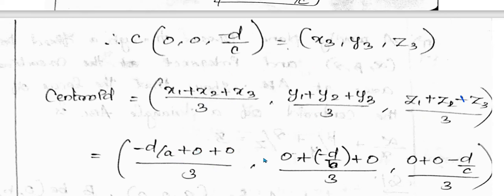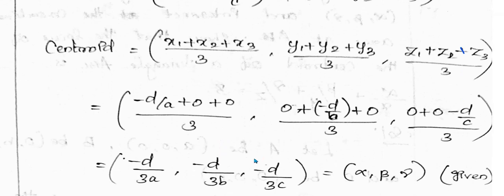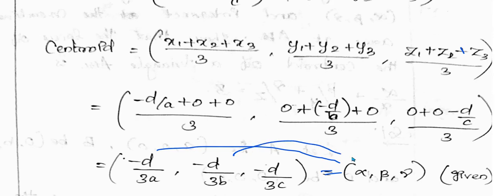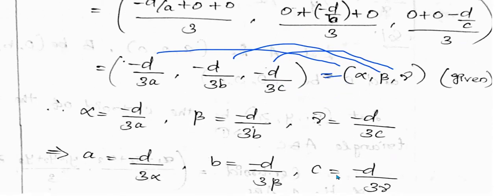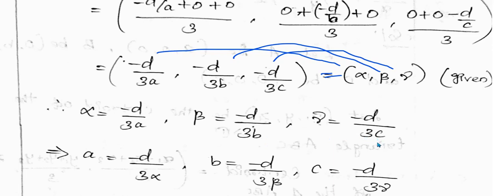Using the centroid formula: centroid = ((x1+x2+x3)/3, (y1+y2+y3)/3, (z1+z2+z3)/3). The centroid is given as (α, β, γ). So -d/(3a) = α, -d/(3b) = β, and -d/(3c) = γ.